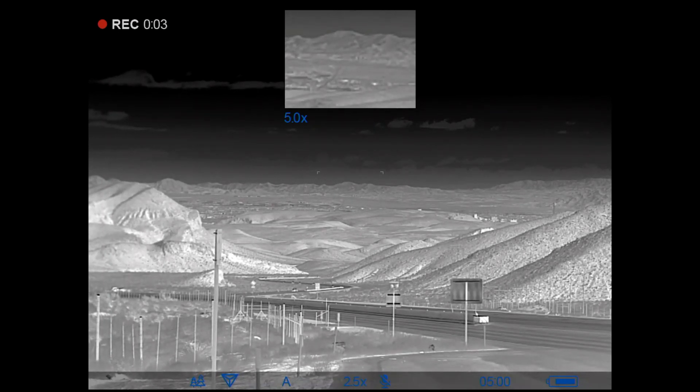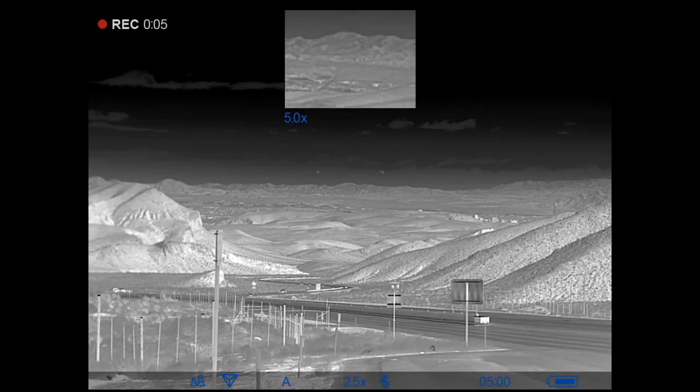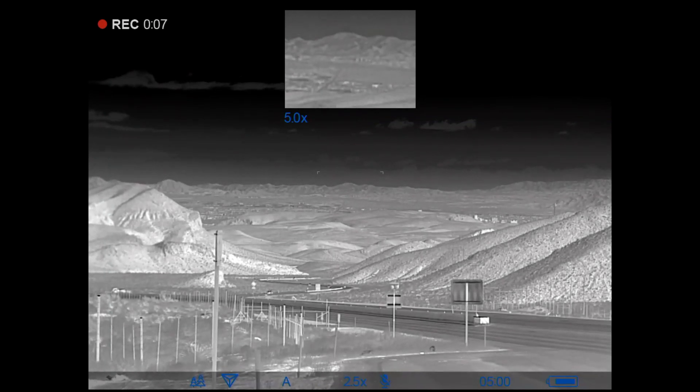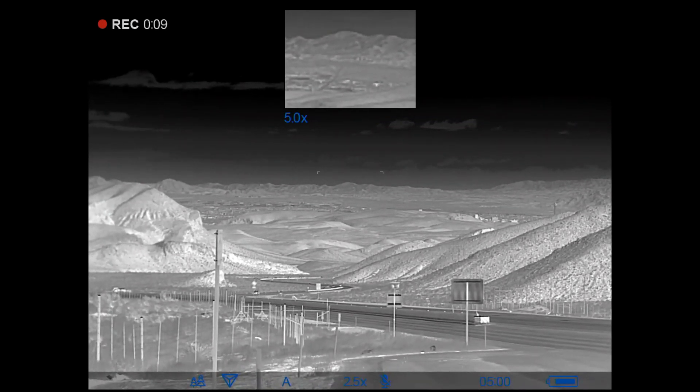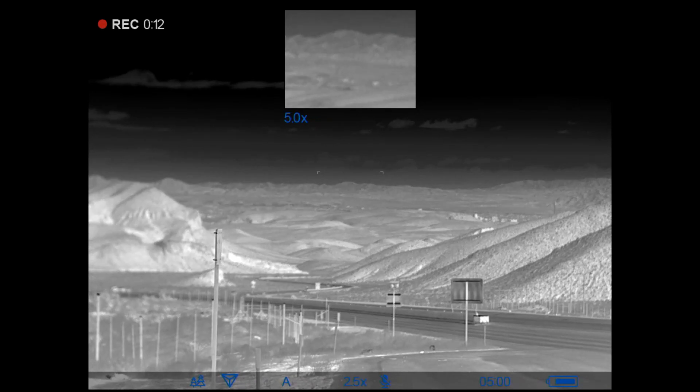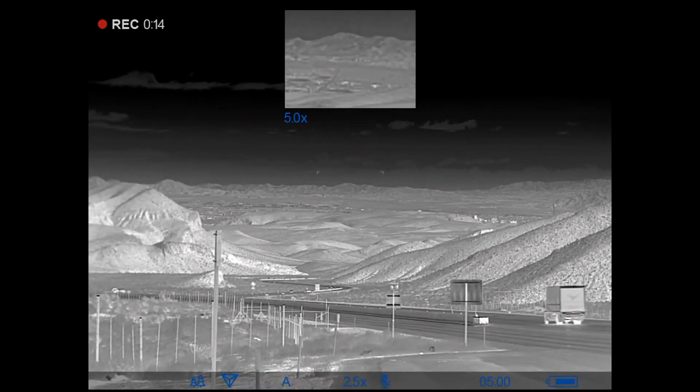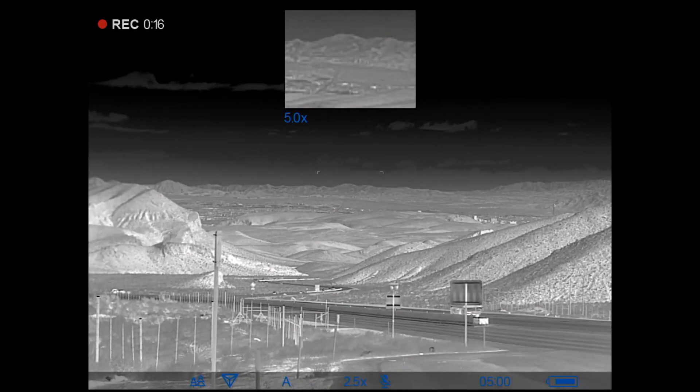Now this is looking down on Las Vegas from the mountains. You can barely see the Stratosphere on the right. This video clip was taken during the day and the dynamic range is actually pretty decent, but at night it's actually much better.